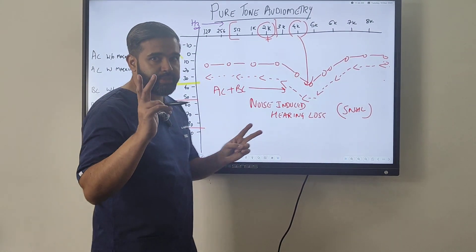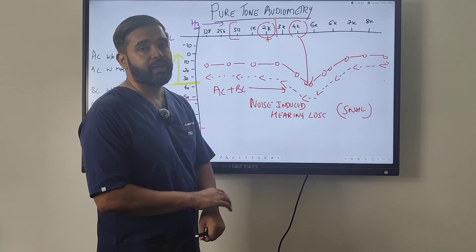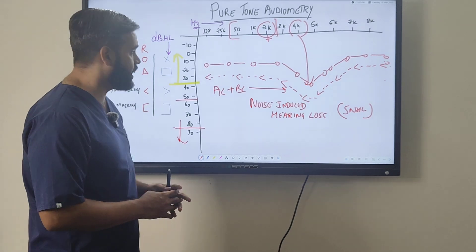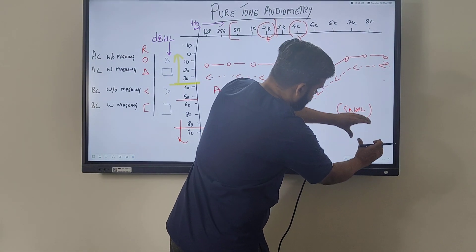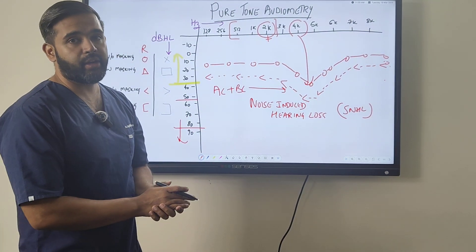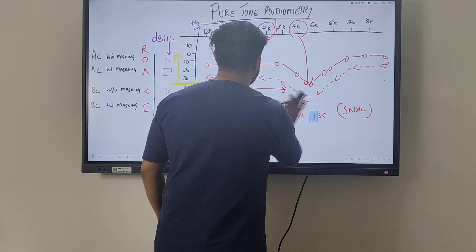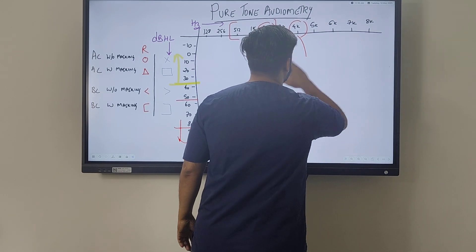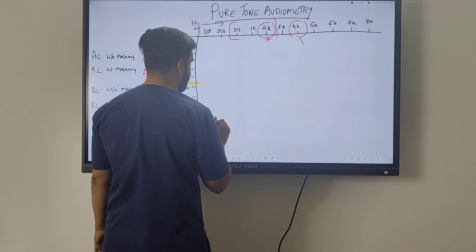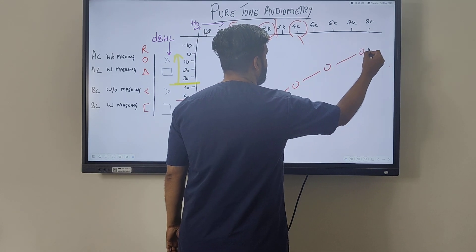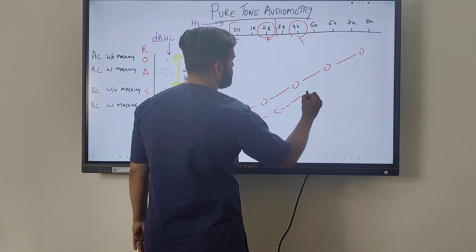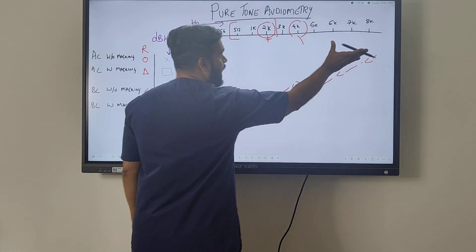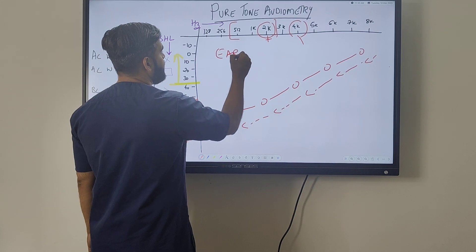To summarize the dips: only bone conduction dip at 2k Hz is Carhart's notch in otosclerosis. Both air and bone conduction dipping at 4k Hz is noise-induced hearing loss. If the entire sensorineural hearing loss slopes downward, that is presbycusis — age-related hearing loss — called downward sloping hearing loss. An upward sloping pattern, where hearing is better at higher frequencies, is the opposite of presbycusis and is seen in early Meniere's disease.